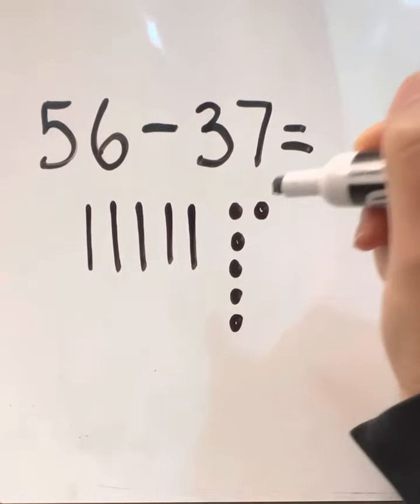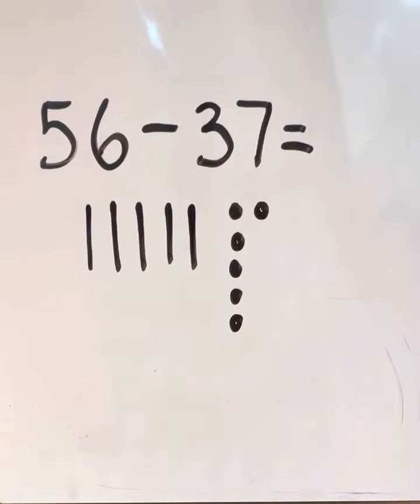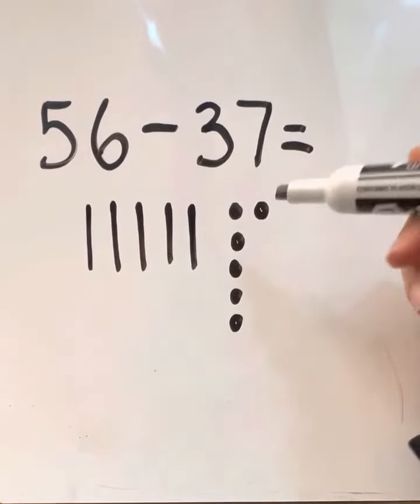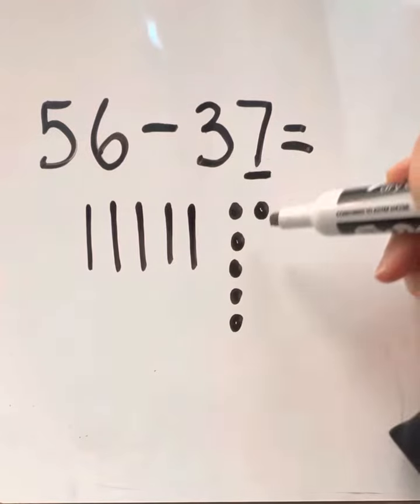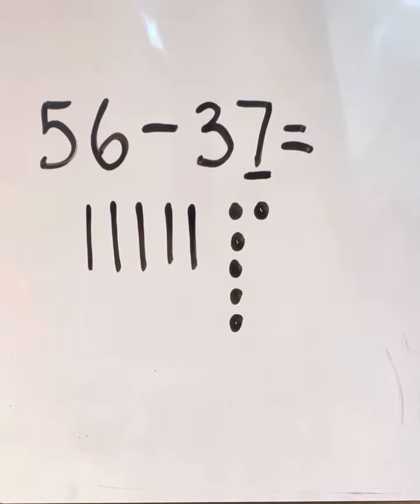We only put 5 in a column, then you start a new column. Okay, then we have to ask ourselves, can we subtract the ones? No. No, we cannot take away seven ones from six ones.